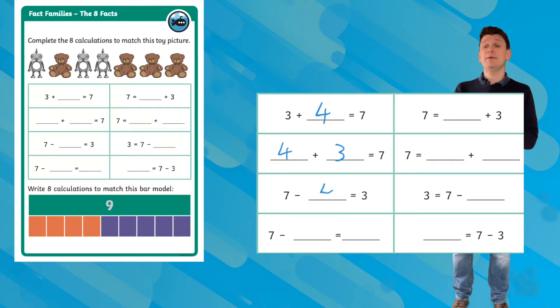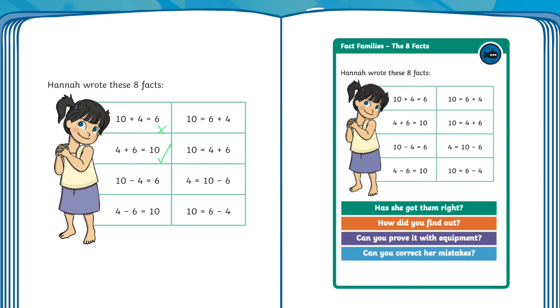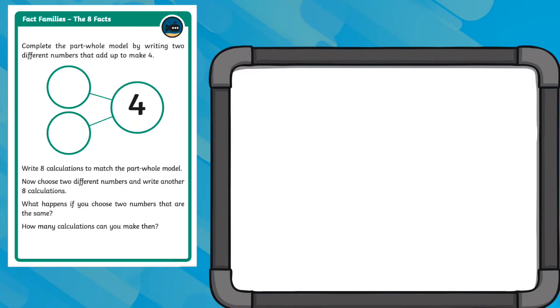The first task is a fluency-based task that explores finding fact families. The second task is a reasoning activity that helps children embed their understanding by exploring misconceptions linked to fact families. The third task is an open-ended problem-solving activity that encourages children to use and apply their new learning of finding linked facts.